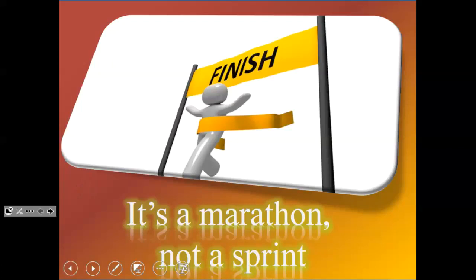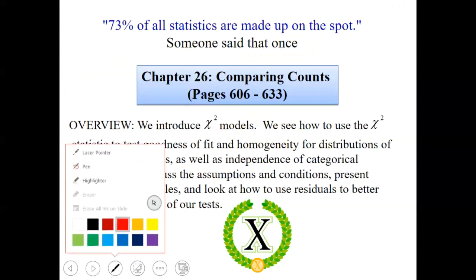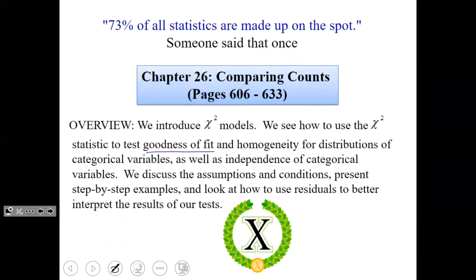We're moving on to a new section now. We're on chapter 26, this is comparing counts. We're gonna introduce our new chi-squared model, talk about what it is, look at how statistics test for goodness of fit, a test for homogeneity for distributions of categorical variables, as well as testing for independence of categorical variables. We'll go through assumptions and conditions, step-by-step examples, and how we can use residuals to better interpret the results.